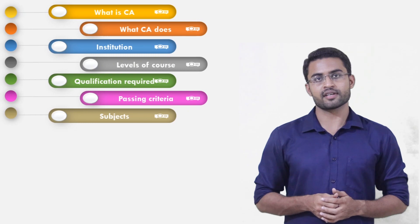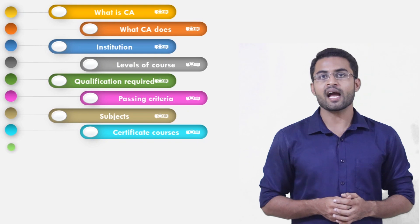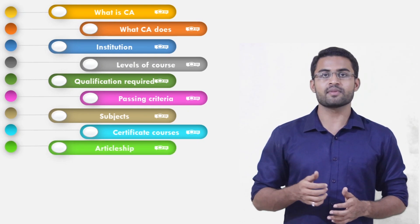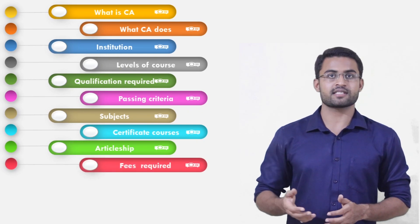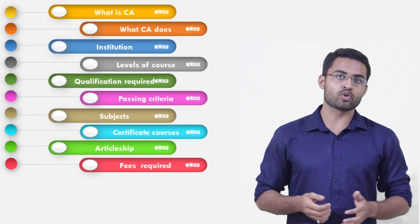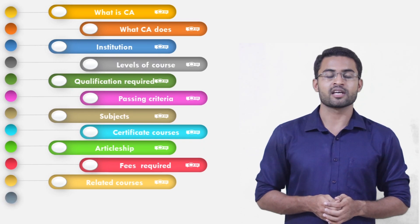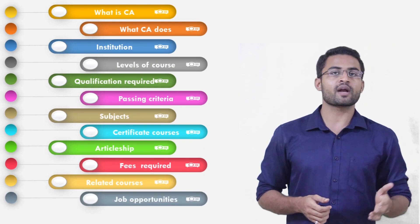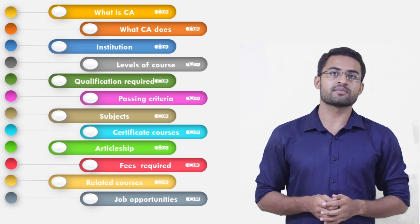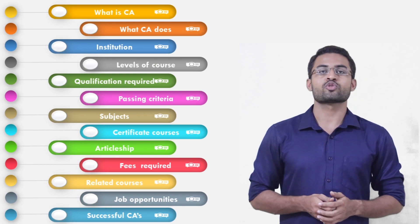In the CA course, there are certified courses we need to complete. At the intermediate level, there are 3-year articles. I will also tell you about the fees required. There are some CA-related courses which I will mention. The most important topic is job opportunities — public sector, private sector, or self-employment. We will also see the most successful CAs in India. So let's start the video.